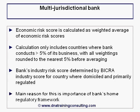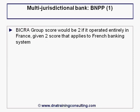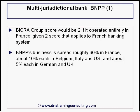The main reason for this is the importance of the bank's home regulatory framework. Take for example BNP Paribas, the French bank whose BICRA group score would be 2 if it operated entirely in France, given the 2 score that applies to the French banking system. BNPP's business is spread roughly 60% in France, about 10% each in Belgium, Italy, and the US, and about 5% each in Germany and the UK.